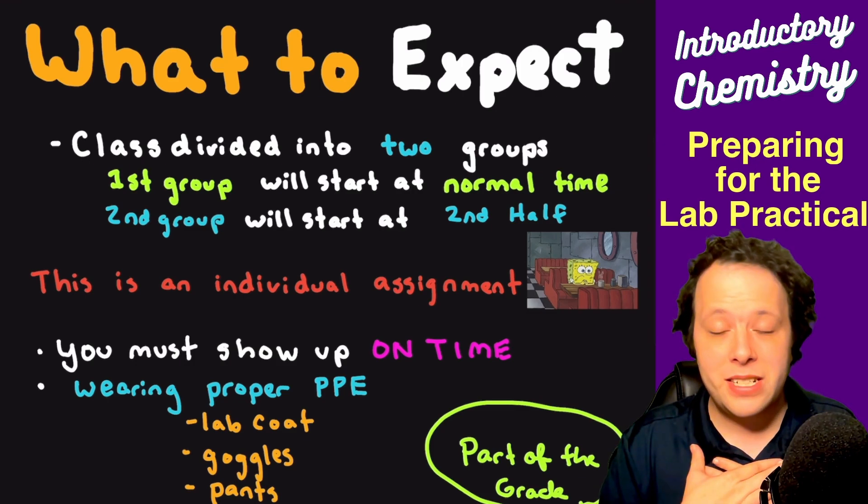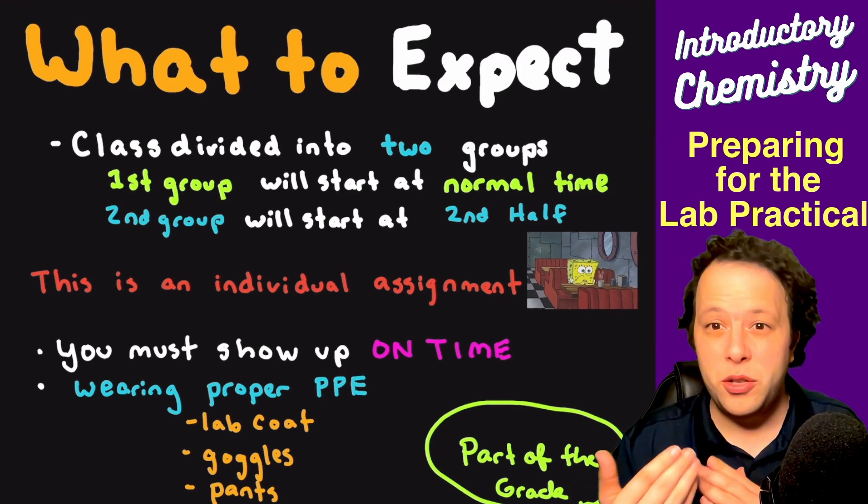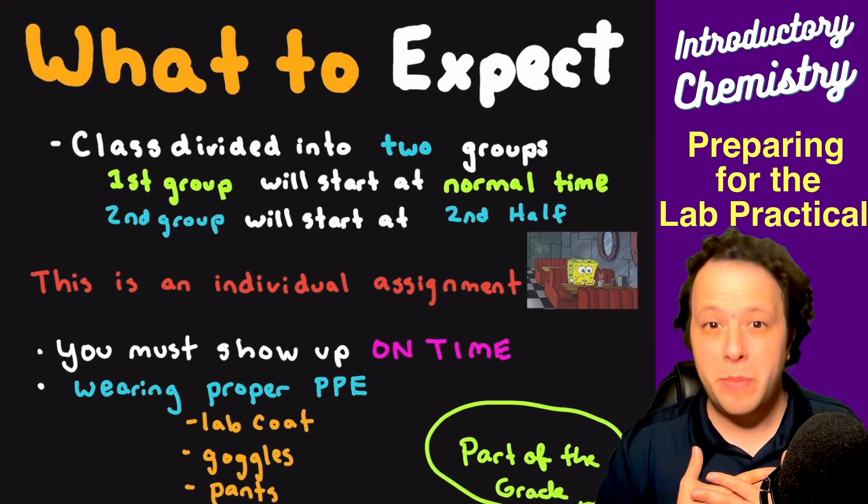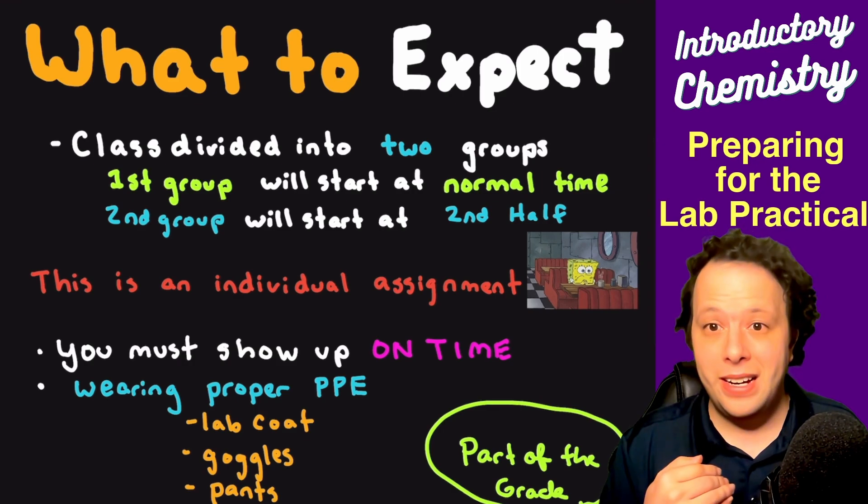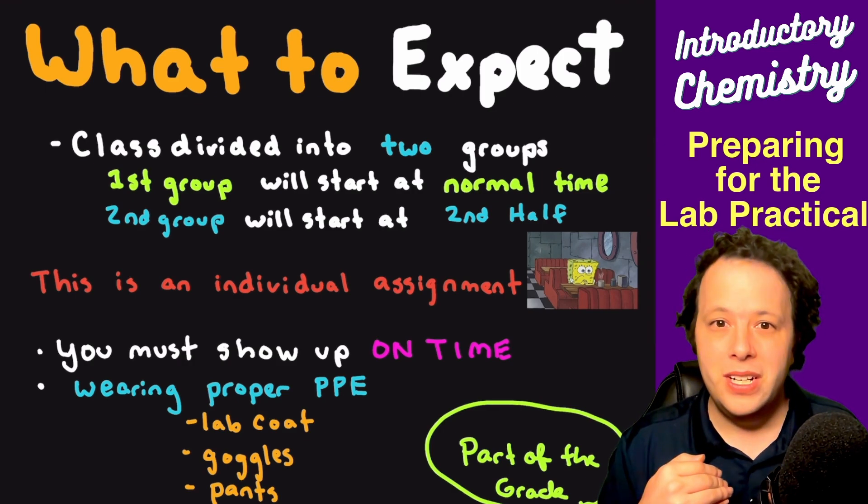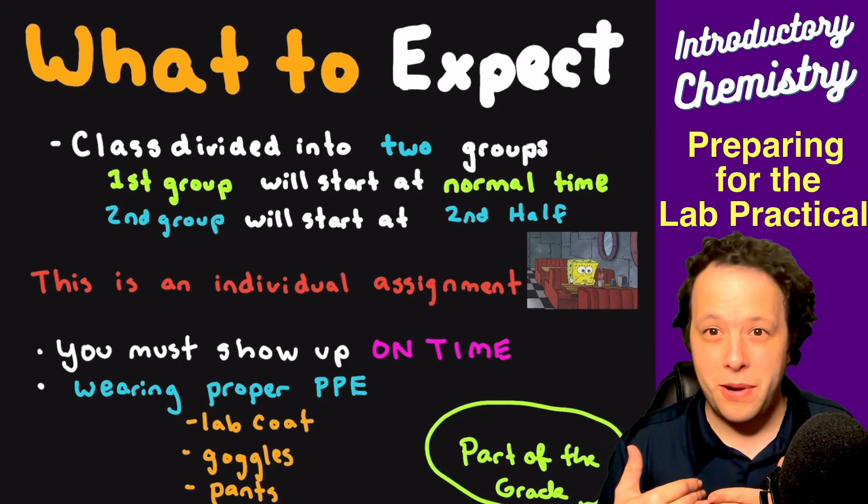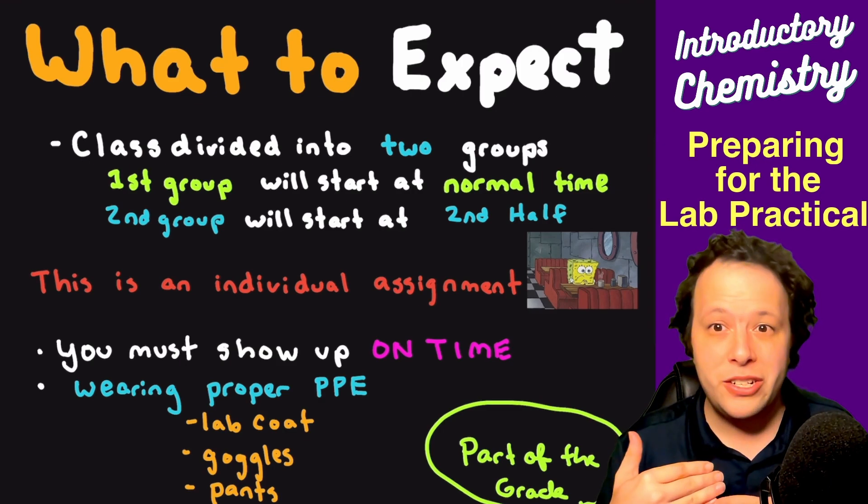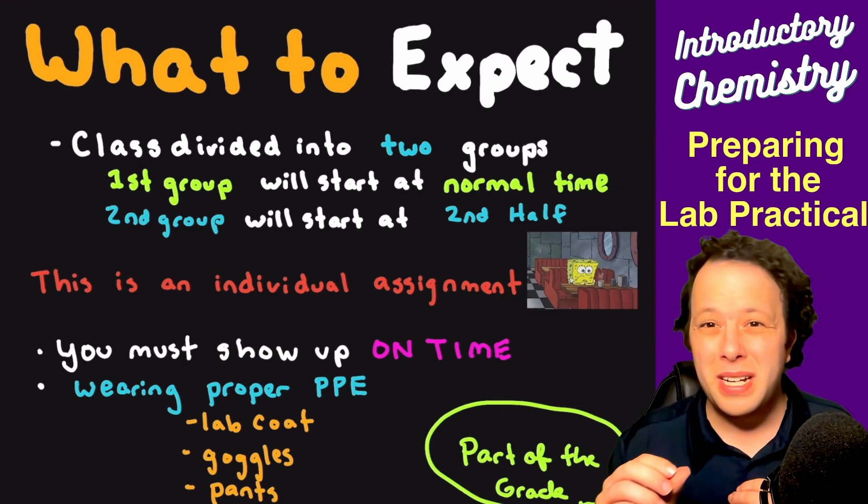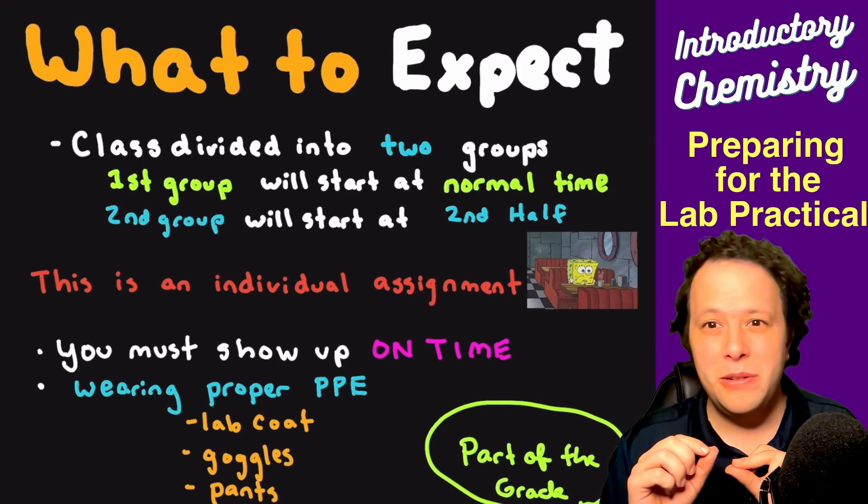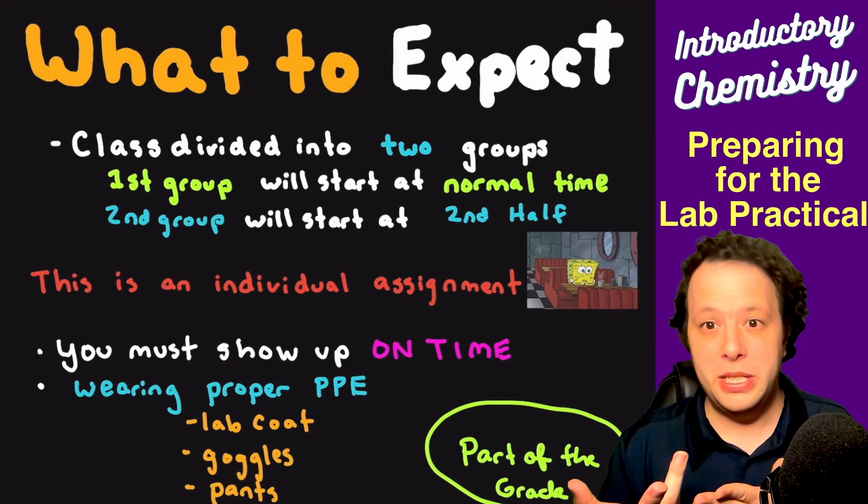When you're assigned your time, you've got to show up on time. For example, if my class starts at 11 a.m., half the students will be at 11 a.m., the other half at 12:30. You must show up on time—that is crucial. Depending on how fast the lab practical starts, if you show up late, there's a big chance you will miss parts of the practical that you cannot make up.